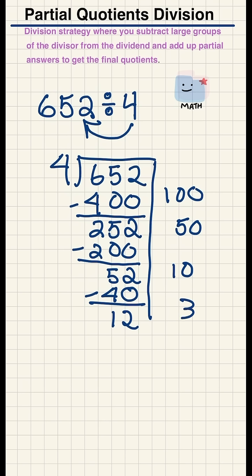Easy peasy, because 4 times 3 is 12, which means that I'll have nothing left, no remainder.